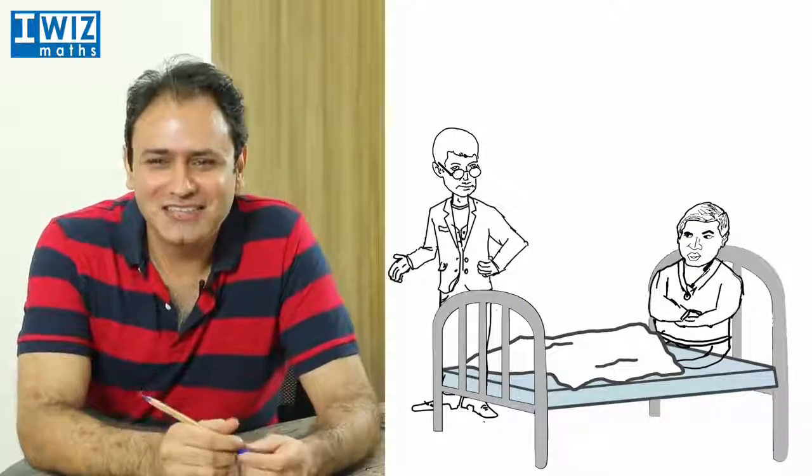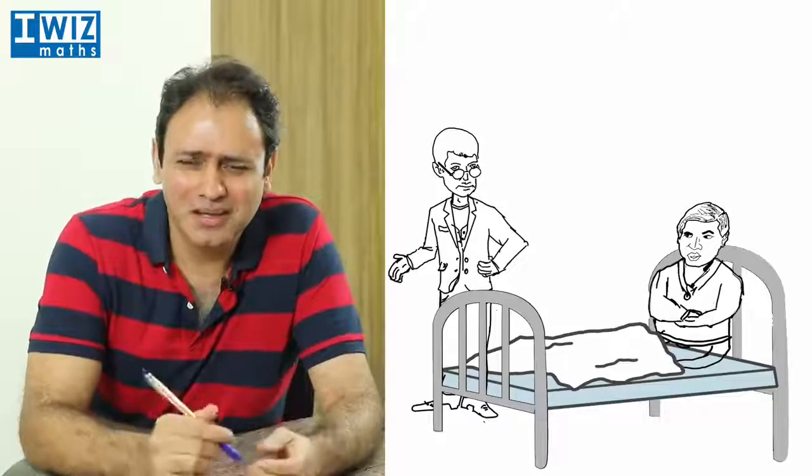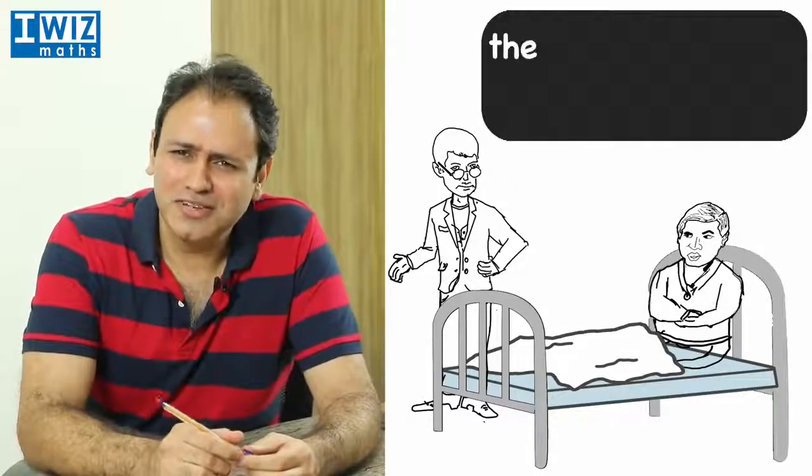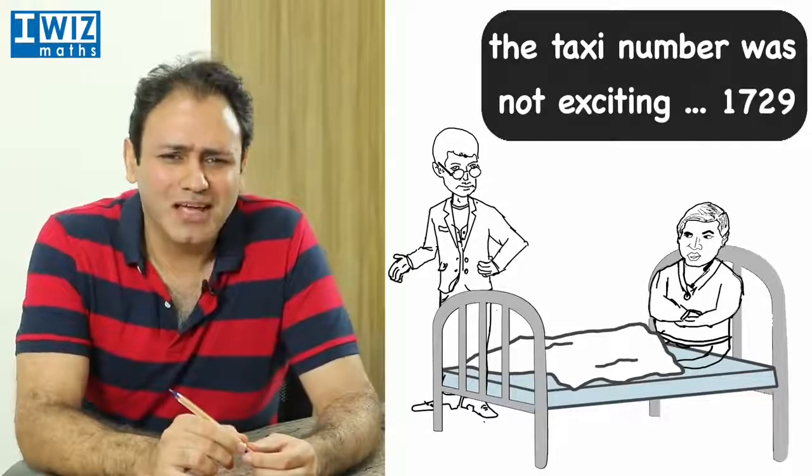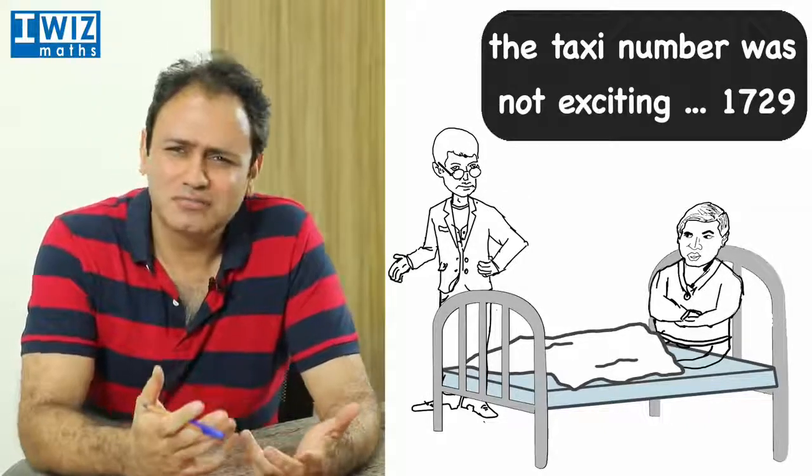So G.H. Hardy tells Ramanujan that the taxi number that he came in was not a very exciting number. It was 1729. And he says, you know, this wasn't very exciting.